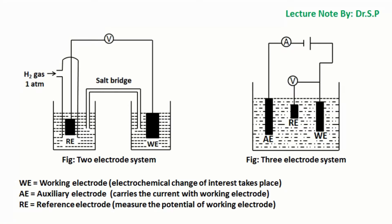In this tutorial we will discuss differences between two-electrode and three-electrode systems. As we can see in the figure, in the two-electrode system there are only two electrodes: one is the working electrode and the other is the reference electrode.